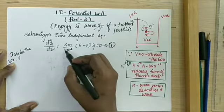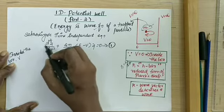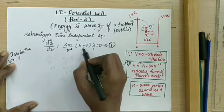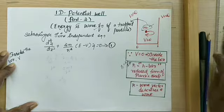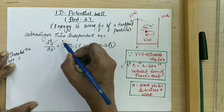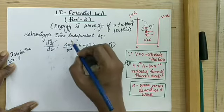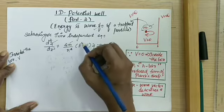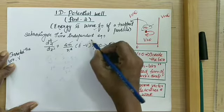We will start the derivation using Schrödinger's time-independent equation, which follows as: d squared psi by dx squared plus 2m by h-cross squared into (E minus V) into psi is equal to 0. Here, psi represents the wave function that denotes the position of a particle at any instant, m represents the mass of a particle, E represents the total energy, and V represents the potential energy.